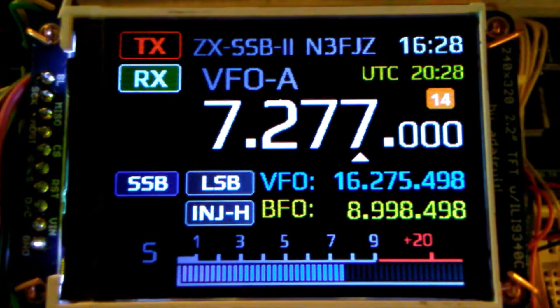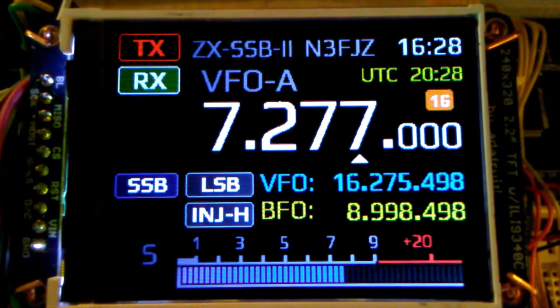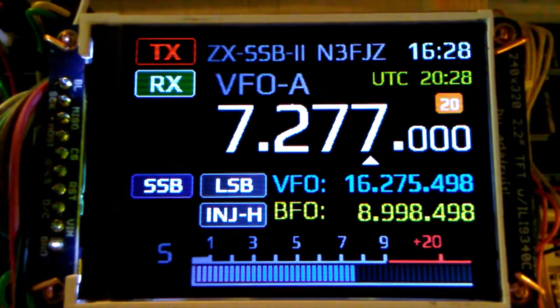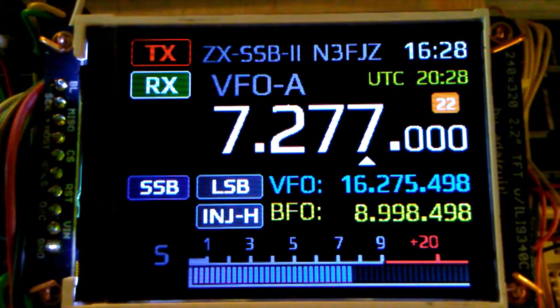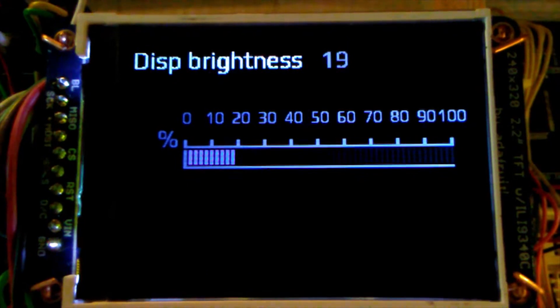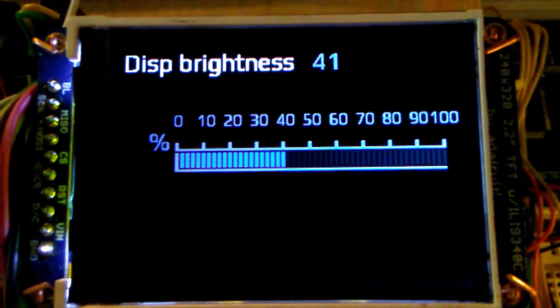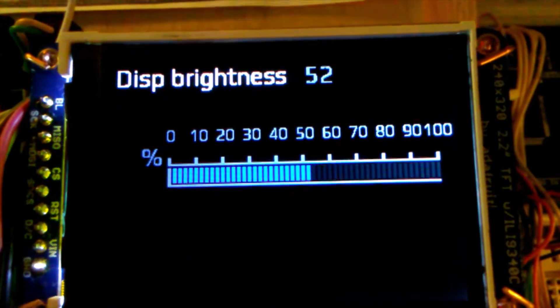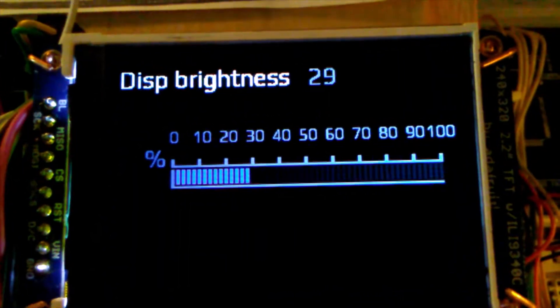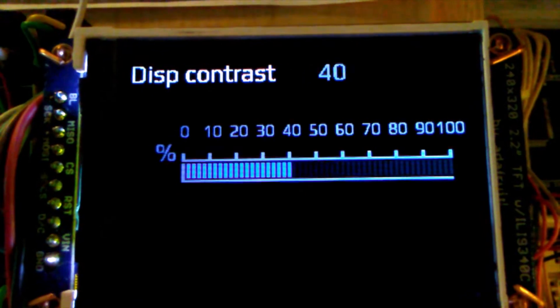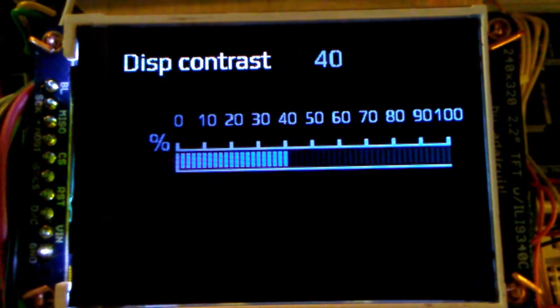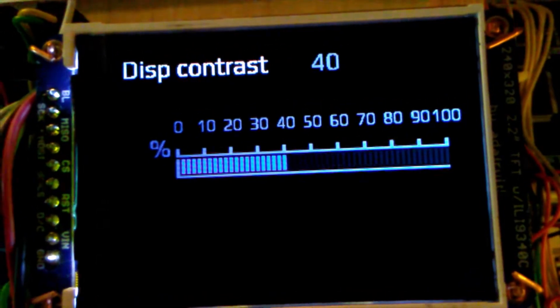So let me go through those new screens. I'm pressing the function button from the main screen. We have a brightness setting screen now where you can set the brightness for both the color display and for the monochrome. You press function again, you'll get a contrast setting display, but this one only affects the monochrome display.